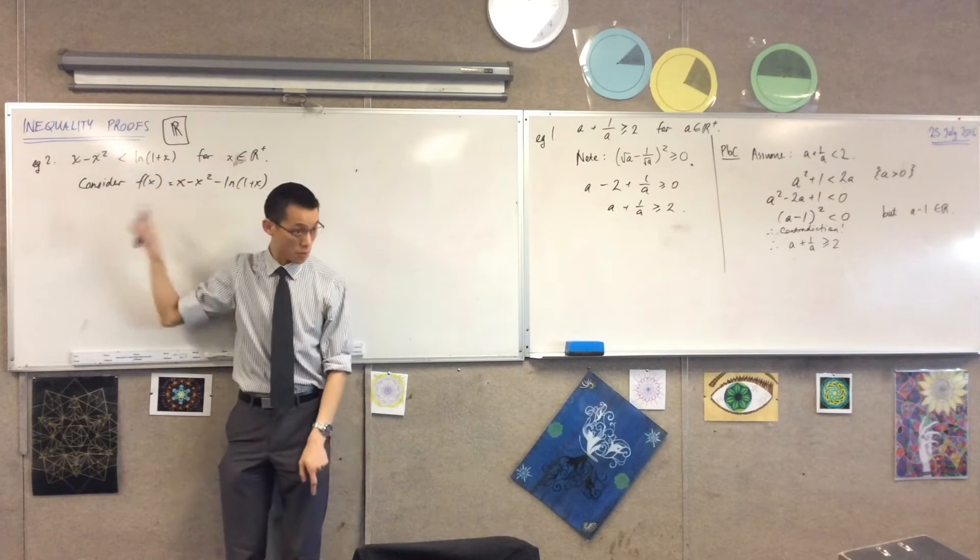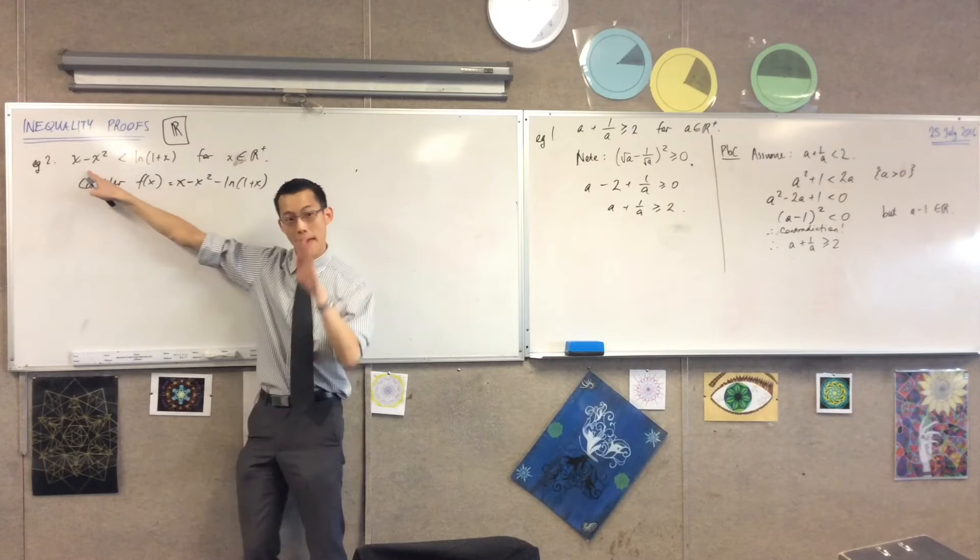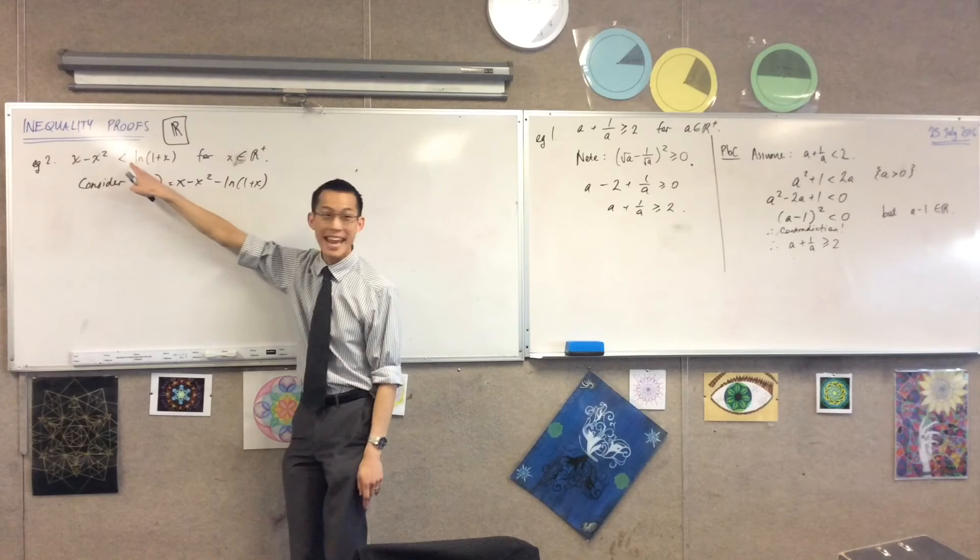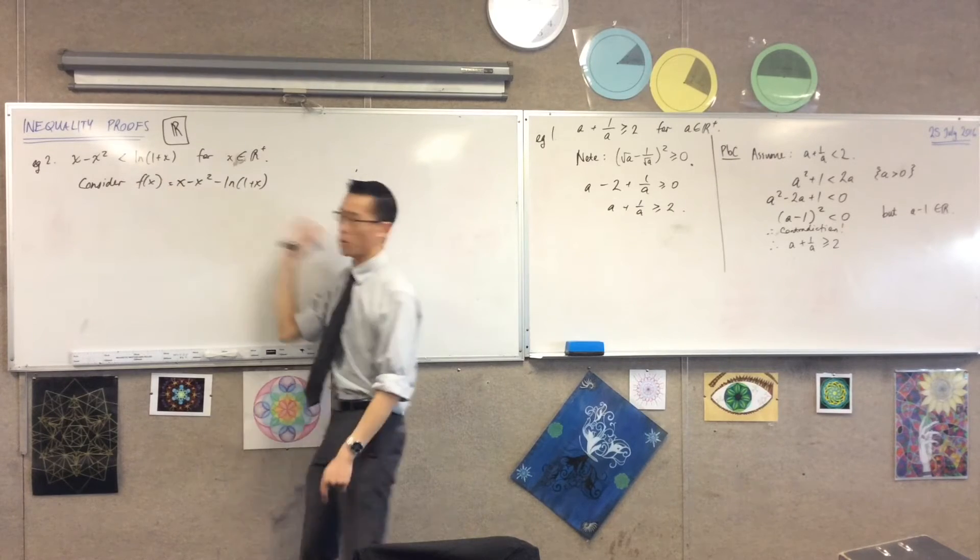Good, because I've just subtracted this from both sides, right? So essentially what I'm aiming towards is x take away x squared take away log(1 + x). I want that to be negative, so therefore I'm going to use calculus to get there.